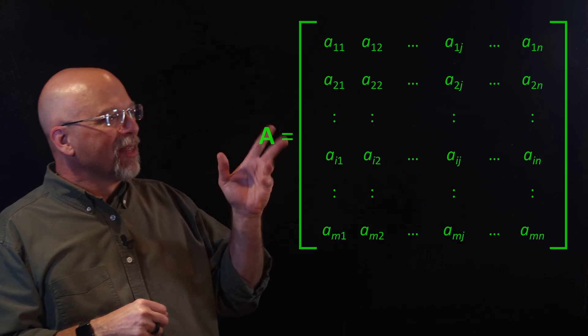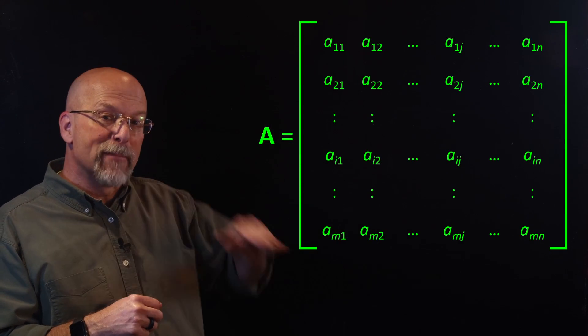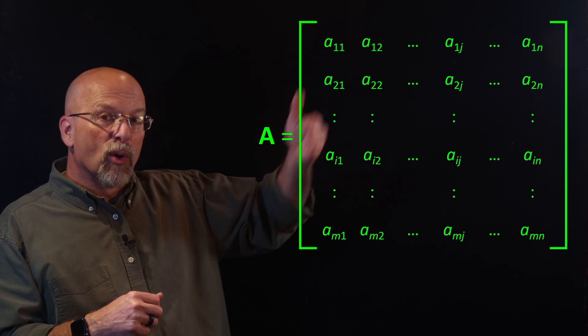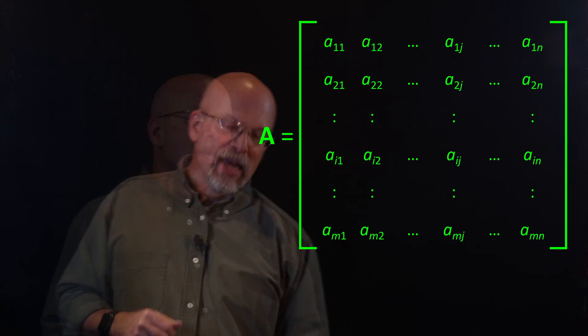What is a matrix? You could look at a matrix as being a sequence of sequences. Each one of those sequences is exactly the same length, so whenever you were to put them down in rows, it would be a perfect rectangle. And in this case, what we've got is m rows, and each row has n columns.